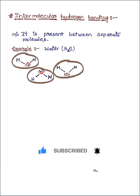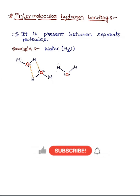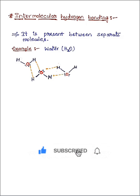We know that oxygen is an electronegative atom. The intermolecular hydrogen bond happens between the oxygen of one water molecule and the hydrogen of another water molecule. So intermolecular hydrogen bonding is present between separate molecules, and it is not limited to only between the same type of molecules.